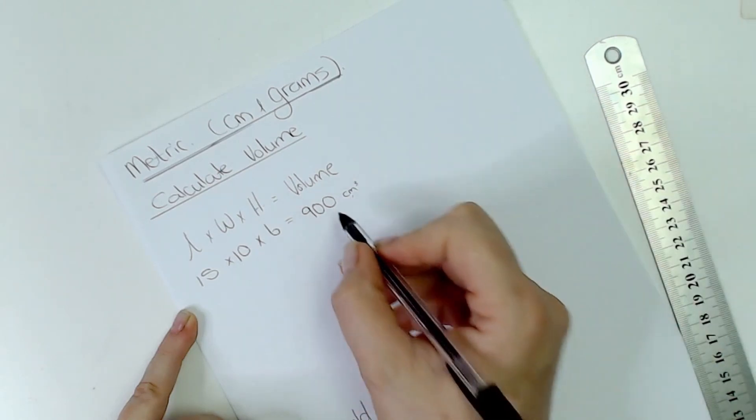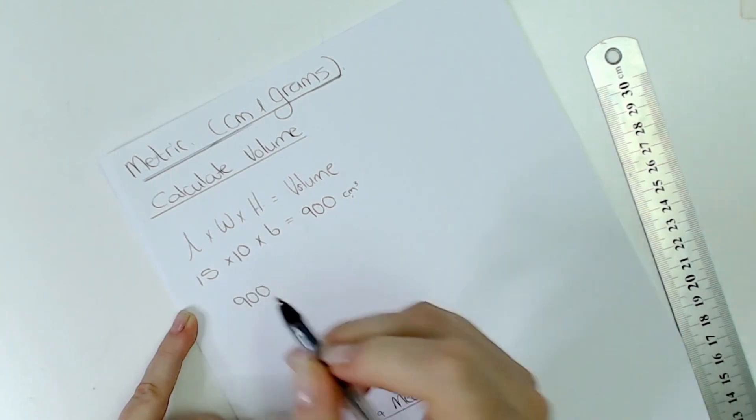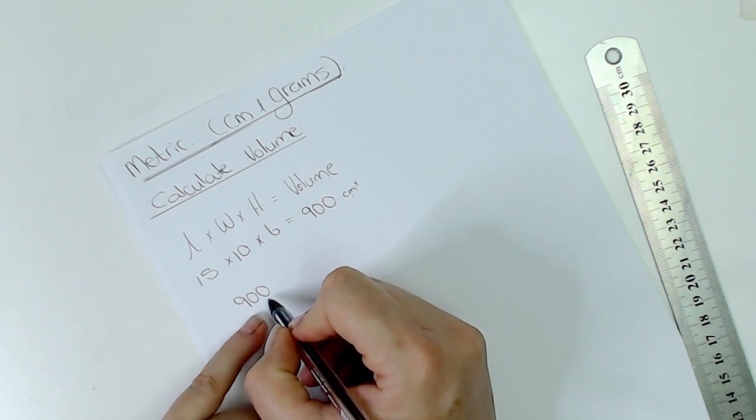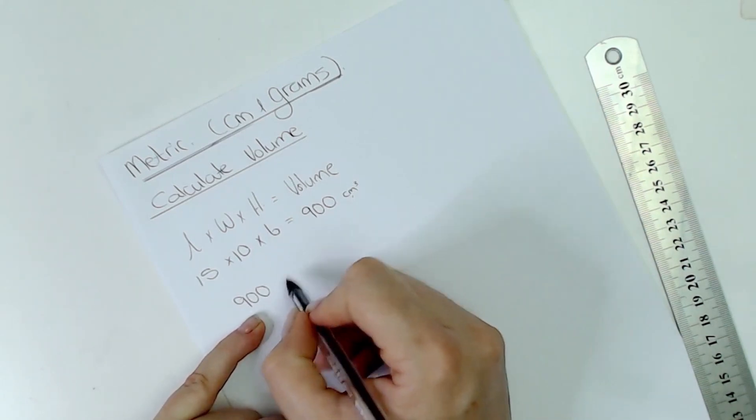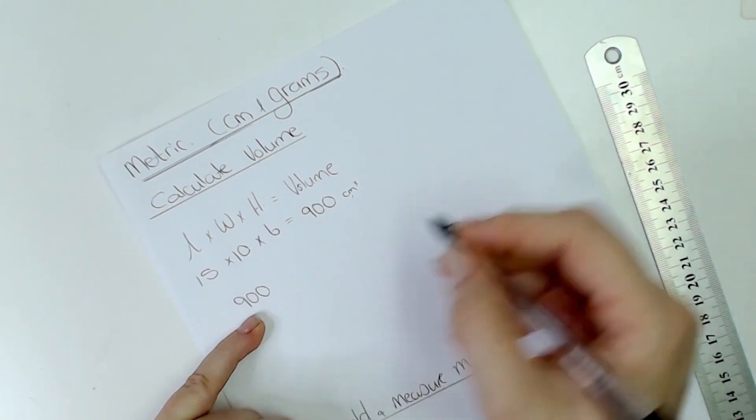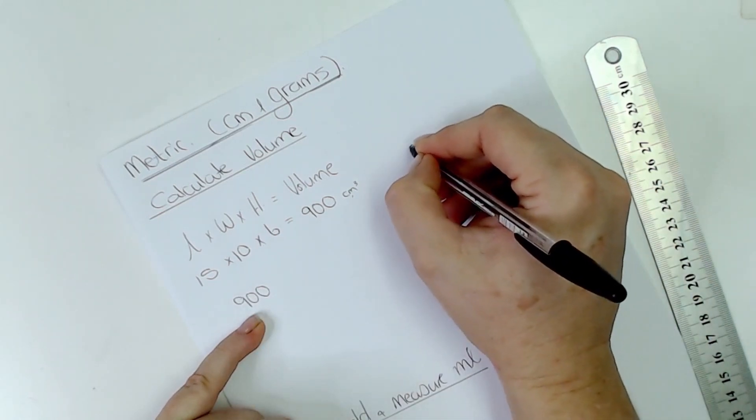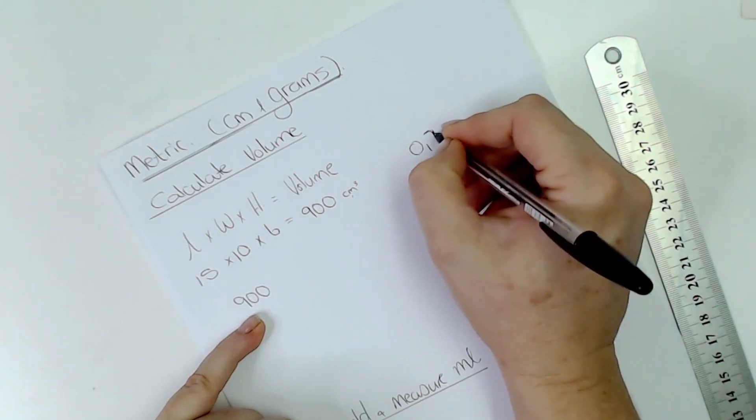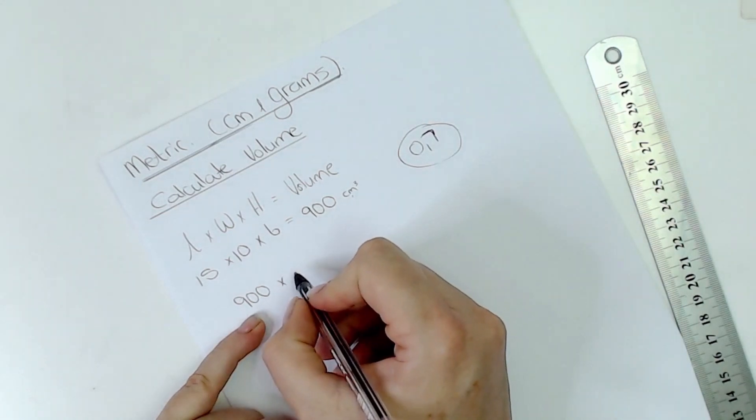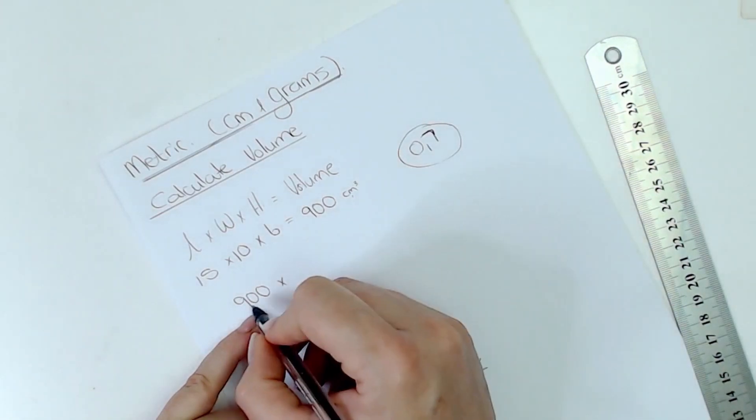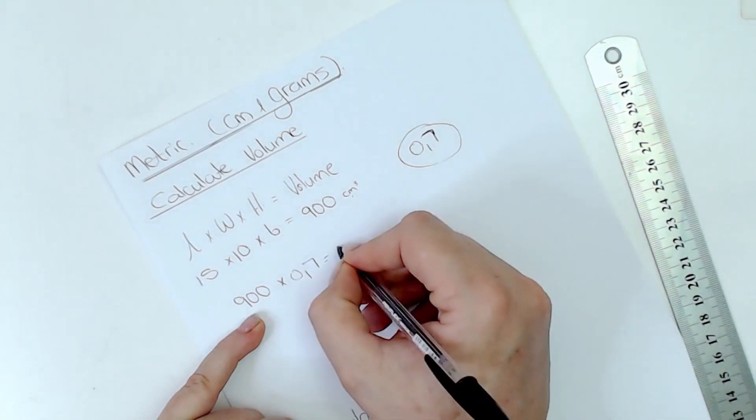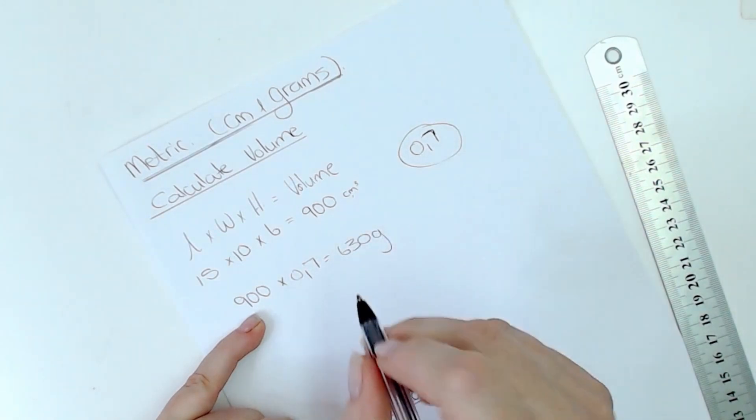So I'm just going to take the 900 and I'm going to switch it over to grams. So if I take 900 I need to calculate how much of this volume needs to be oil. Now what we're going to use here in the metric system is 0.7, it's a factor that we're going to use to get to the oil weight not the volume. So it's 900 times 0.7 and that's going to give you 630 grams of oil that you need.